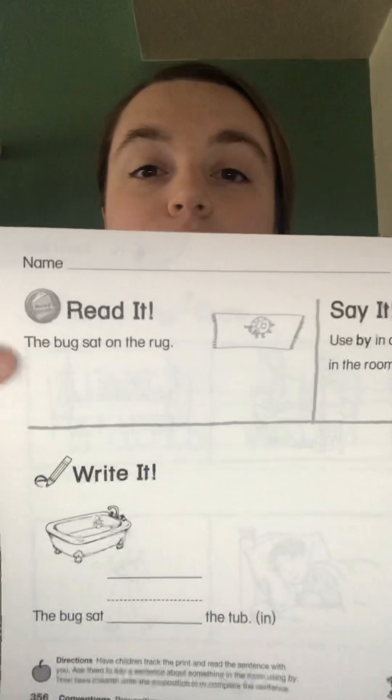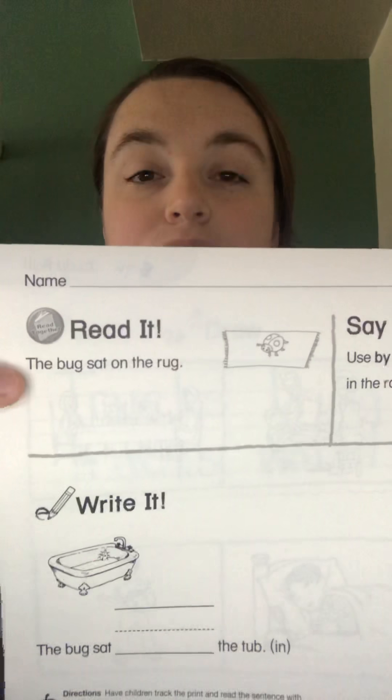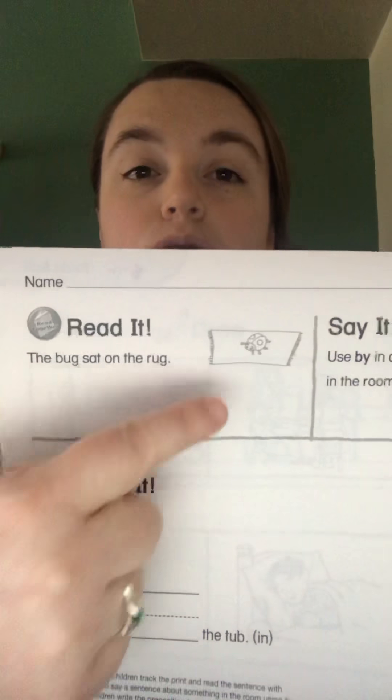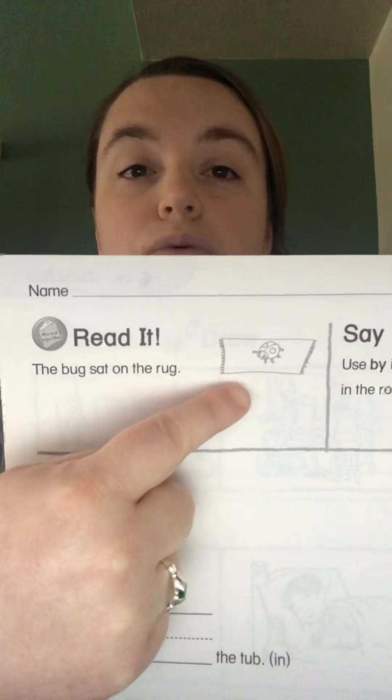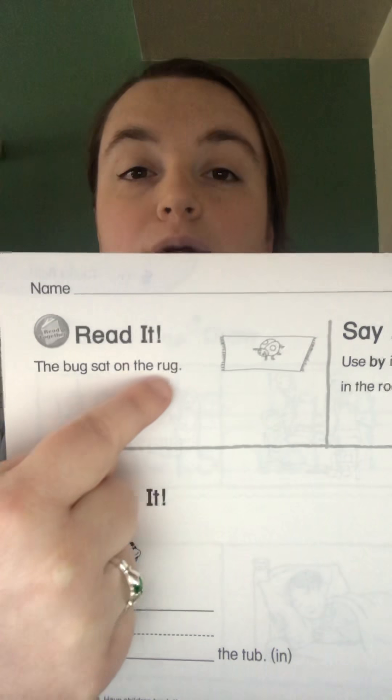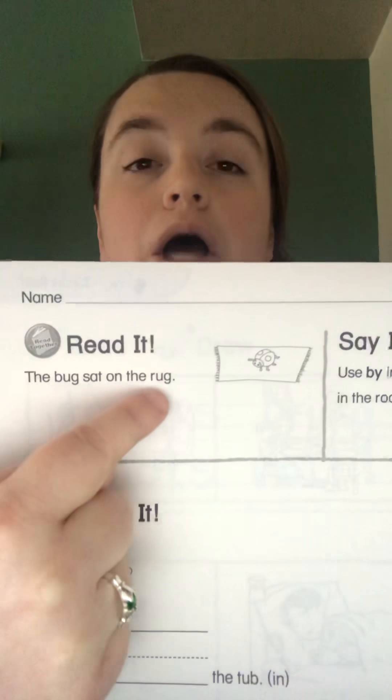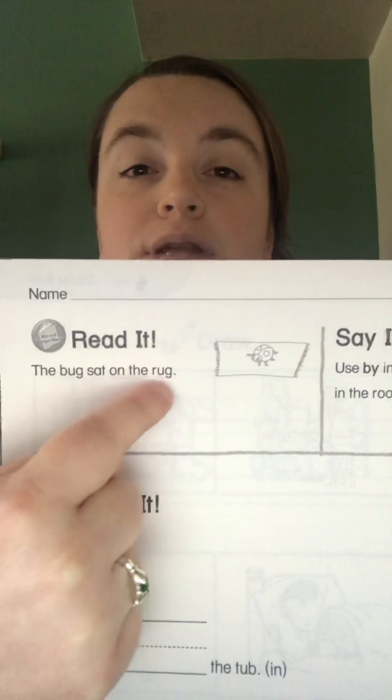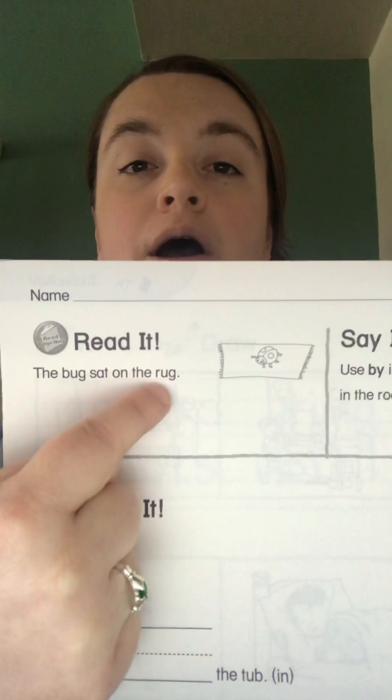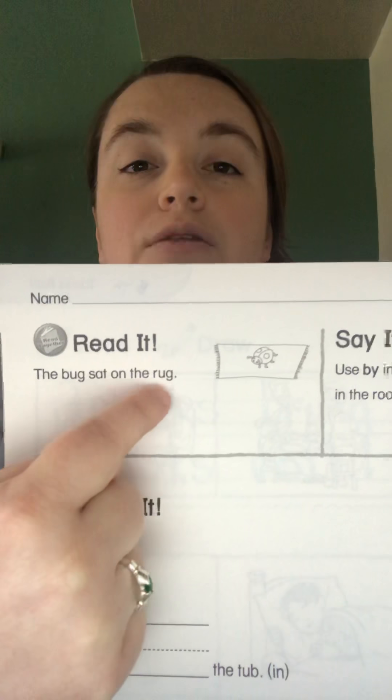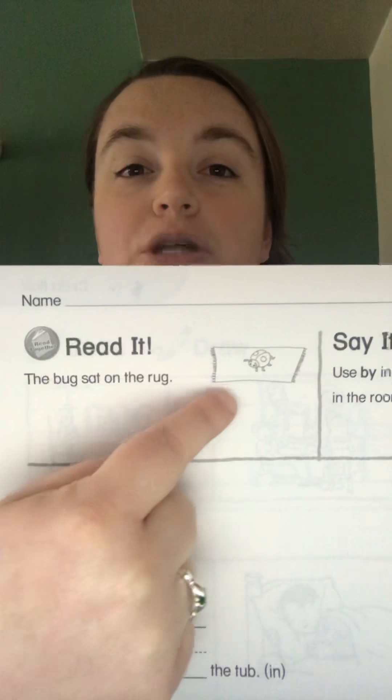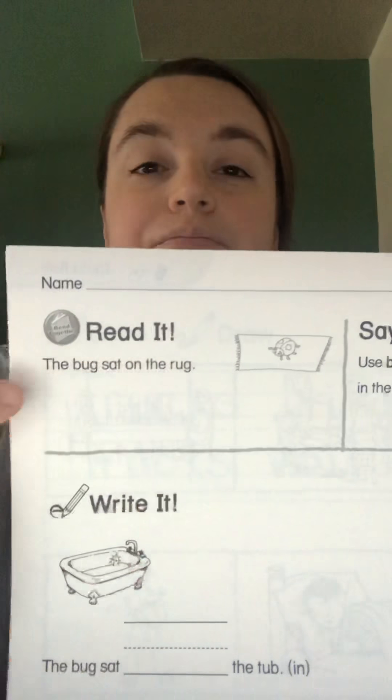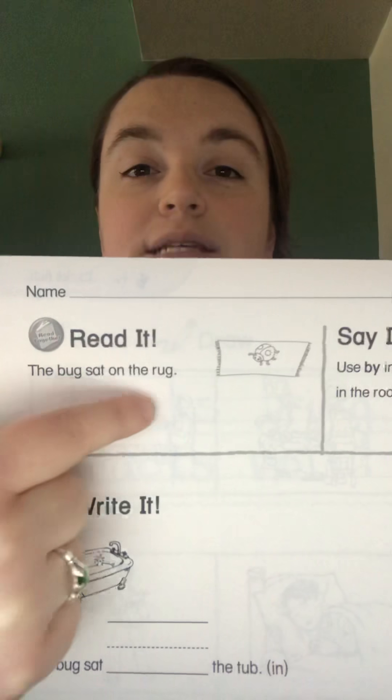Then let's turn to the final page in our packet, page 356. Super, super simple. I would like you to read this sentence to somebody in your house. Make sure you're looking at the picture for a clue. We know that we've been working a lot with the short U sound. Uh, uh. So we could sound out this word. What do you think that spells? Look at your picture. Uh, uh, and read your entire sentence out loud.